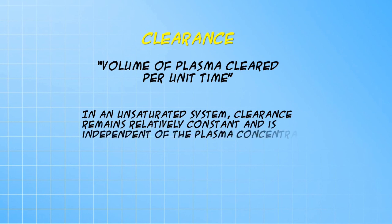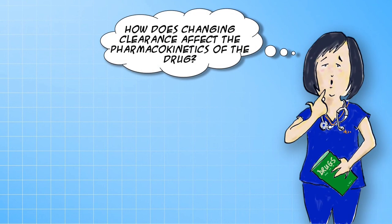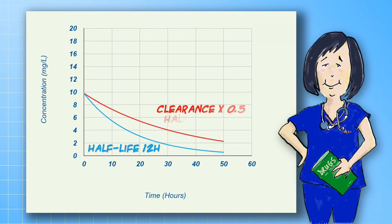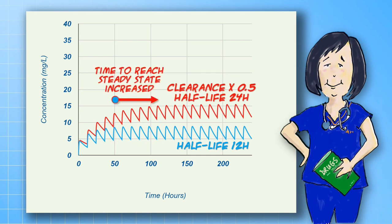In a situation that is not saturated, the clearance of a drug is independent of the drug concentration. So you might ask, how does all this affect the pharmacokinetics of a drug? Reducing the clearance increases the concentrations of the drug, and the half-life is increased. In a multiple-dose situation, you can see that the steady-state concentrations increase, and because the half-life increases, the time to reach steady-state is correspondingly increased.